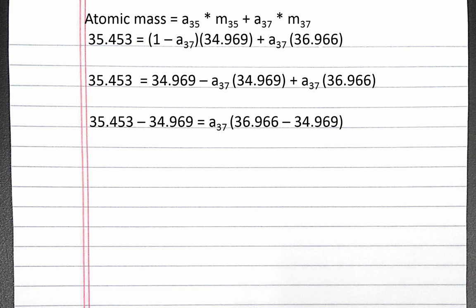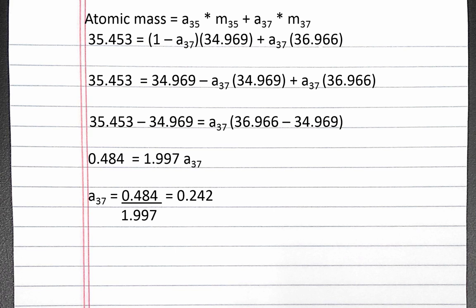We can combine the coefficients of the abundance of chlorine-37. Completing the subtraction on each side, we get 0.484 equals 1.997 times the abundance of chlorine-37. Dividing both sides by 1.997, we get the abundance of chlorine-37 is 0.242. This means any naturally occurring sample of chlorine will have 24.2% chlorine-37 by mass.